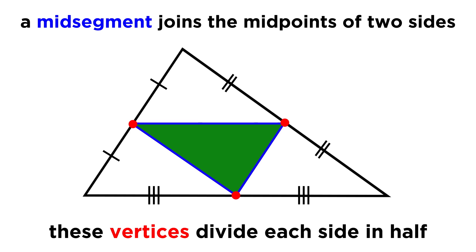Since the vertices of the mid-segment triangle are the midpoints of these sides, we can know that the segments on either side of a midpoint are equal to one another. This is signified by these tick marks. One line here and one line here means these are the same. Two lines here and two lines here means these are the same as each other, but not necessarily the same as the segments with one tick mark. Three tick marks, same idea.